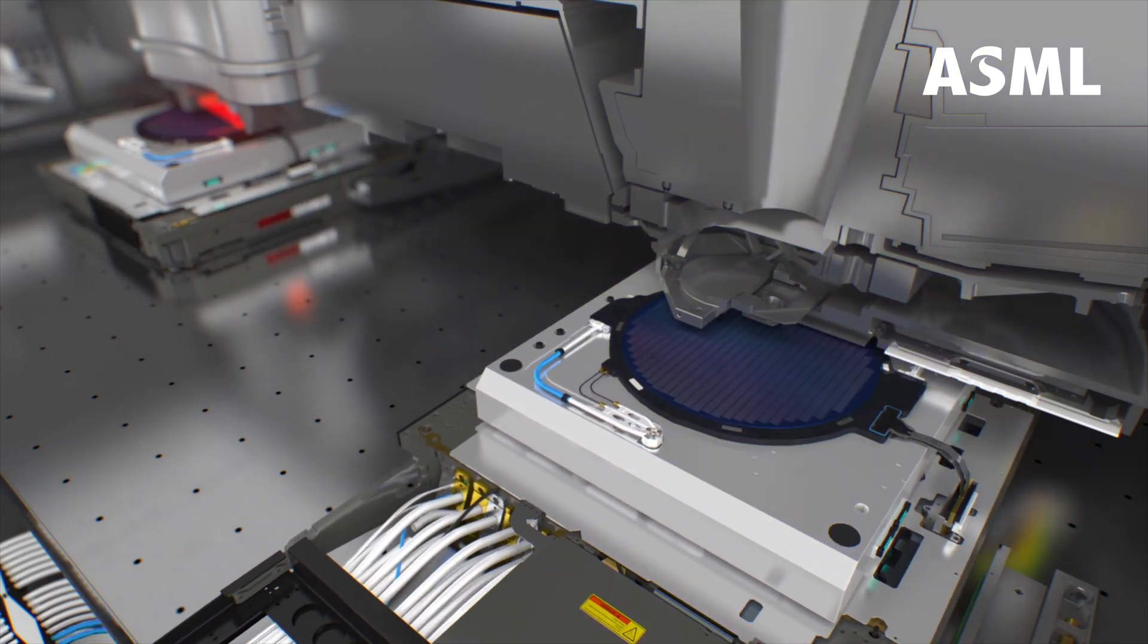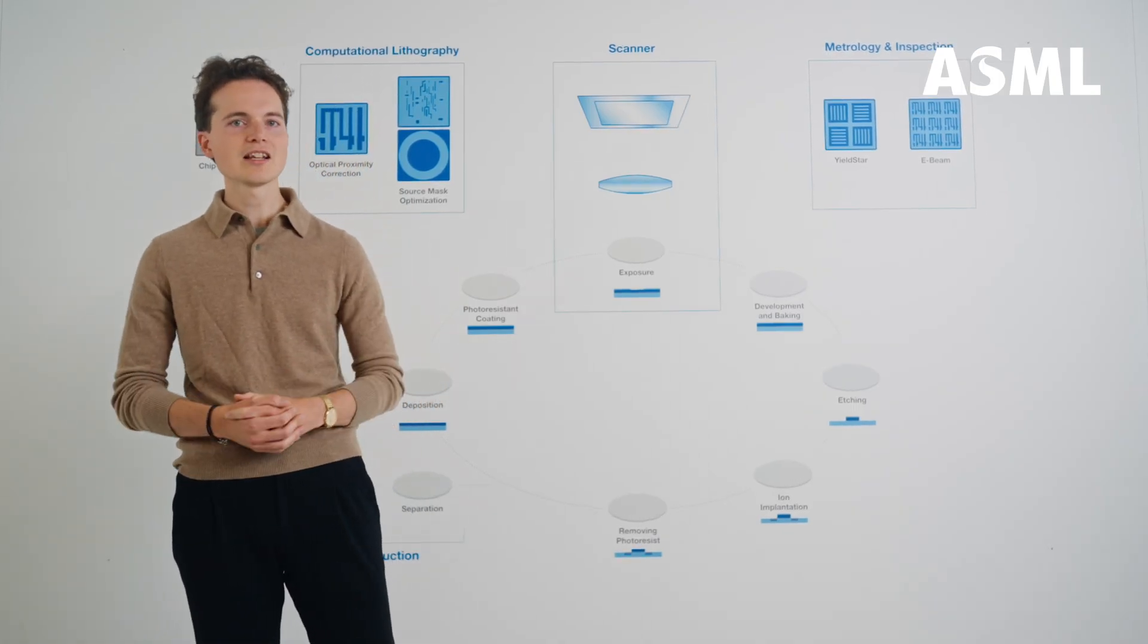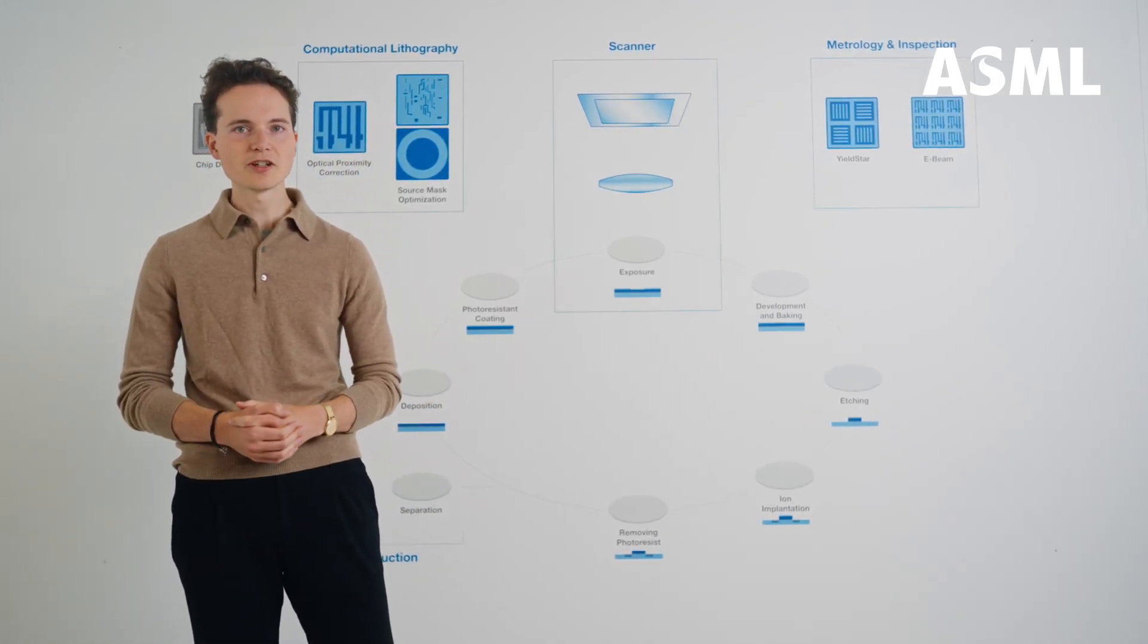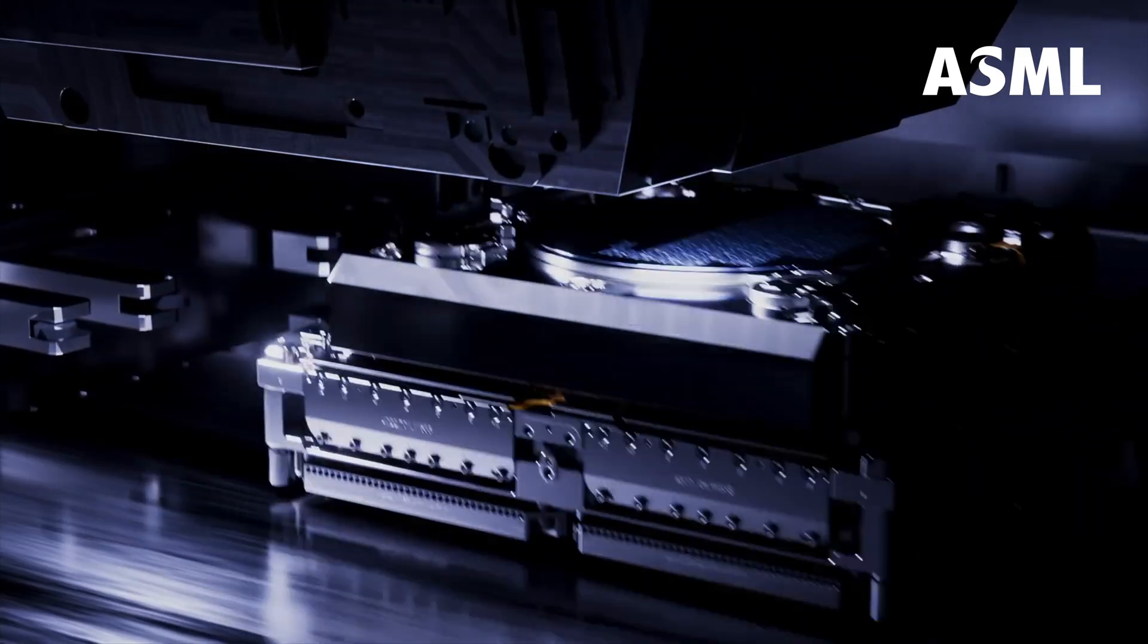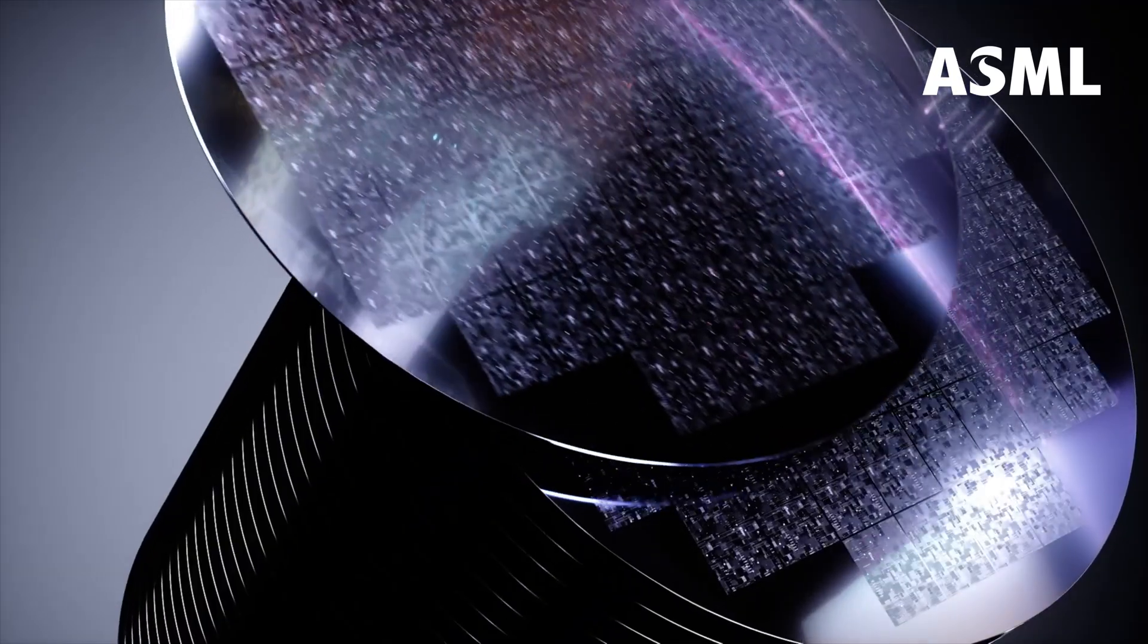Next, the wafer goes into a photolithography machine. That's us! Our machines use ultraviolet light to quickly and precisely print the 2D pattern of one chip layer onto the wafer. The pattern is printed on each part of the wafer that will become a chip.